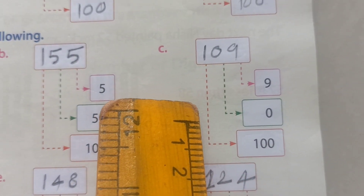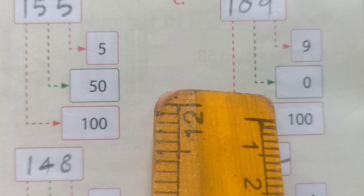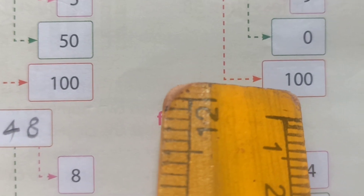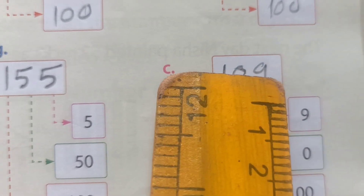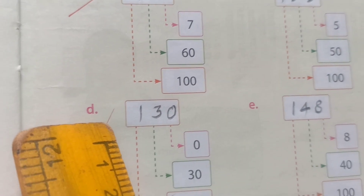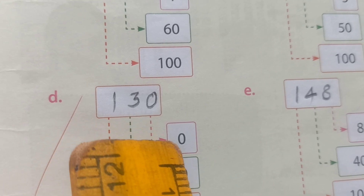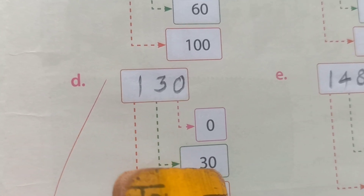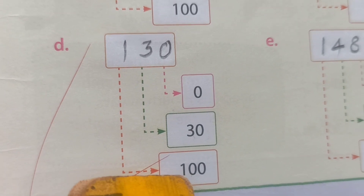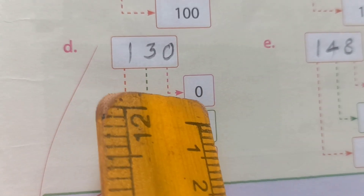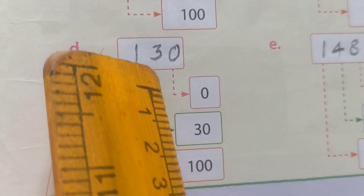C number: 109. Textbook given down numbers — 9 ones, 0 tens, and 100. Means 100 and 9 ones: 109. D number: 130. Textbook given 0 ones, 30 means 3 tens, and 100. So how we form: 0 ones, 3 tens, 1 hundred — 130.